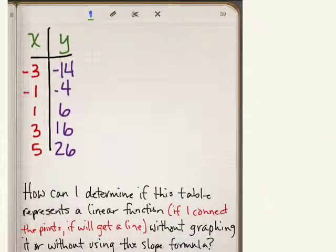What my group did was we found patterns inside the table. So right here, negative 14 to negative 4, that's adding 10. And then from negative 4 to 6 is adding 10. 6 to 16 is 10, 16 to 26 is 10.